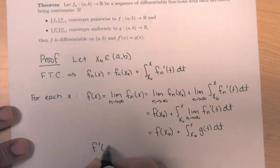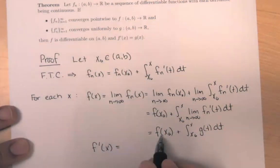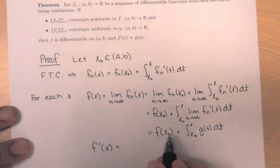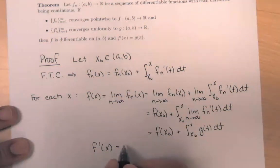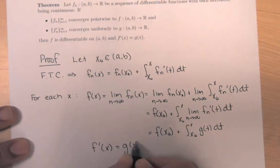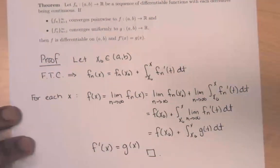Therefore, f'(x) = 0 + g(x) = g(x), since f(x_0) is a constant whose derivative is 0, and the derivative of ∫_{x_0}^{x} g(t) dt with respect to x is g(x). And we've proven our result.